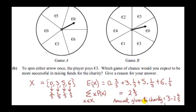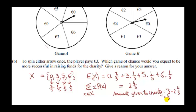Now remember, to play the game the player paid three euros. So the expected amount given to charity is the amount the player pays minus the expected amount the player wins. On average, the player will end up paying one-fifth of a euro — that's 20 cents — to charity from Game A.